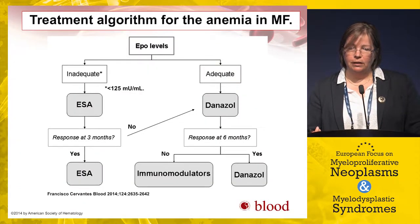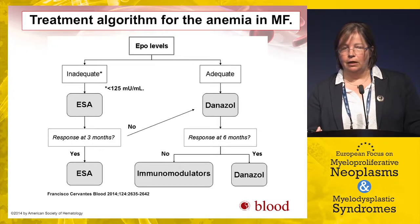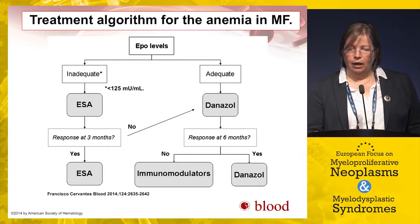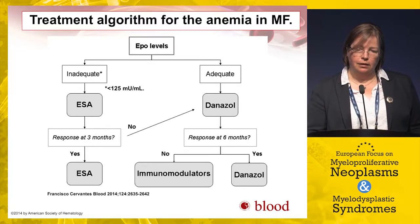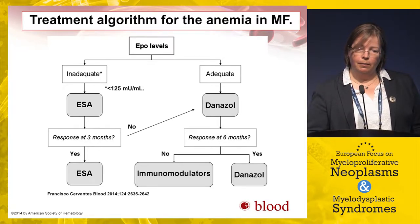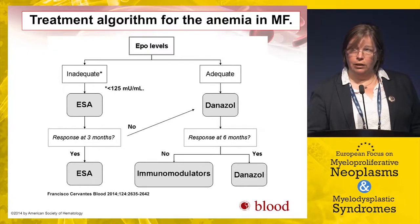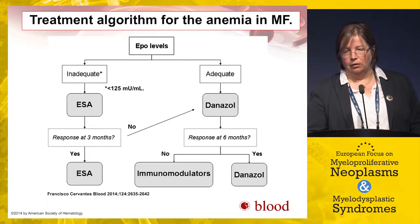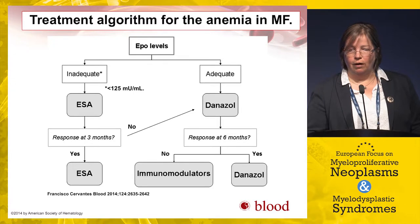I showed the treatment algorithm from Francesco Cervantes for management of anemia — anemia remains a big problem for these patients, and it's helpful that we have newer agents to test in that setting. I tend to measure EPO levels before initiating a JAK inhibitor, use an ESA if levels are low, or use Danazole or an equivalent drug for at least three to six months in patients who have not responded to EPO or have high EPO levels.